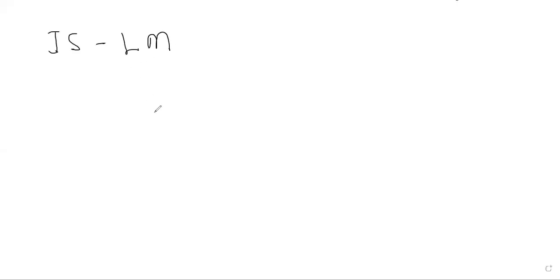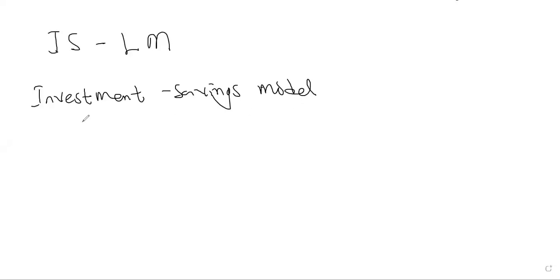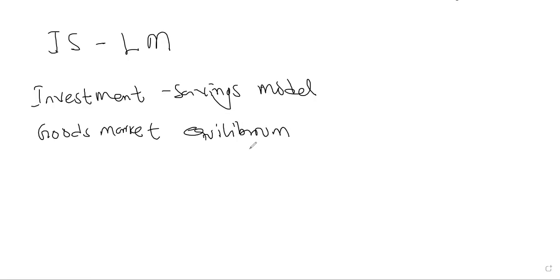IS-LM is simply IS and then LM — broken into two parts. IS simply means Investment Savings model. This Investment Savings model is actually the equilibrium achieved in the goods market. When we look at the market for goods and services, the equilibrium achieved in the goods market is the IS — that is the Investment Savings model.